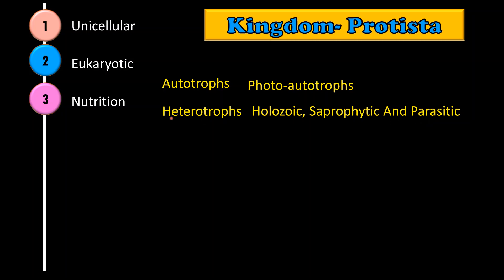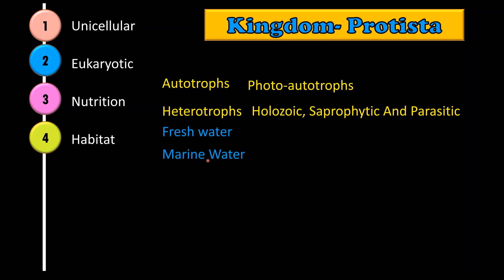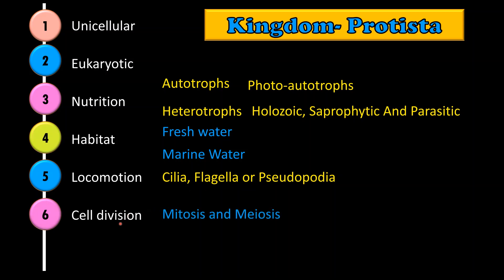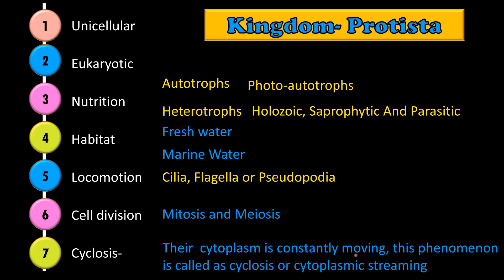These organisms are abundantly found in fresh water as well as marine water. They show locomotion with the help of cilia, flagella and even pseudopodia. They are characterized by the presence of mitosis and even meiosis in the life cycle. Their cytoplasm is constantly moving — this phenomenon is called cyclosis or cytoplasmic streaming.